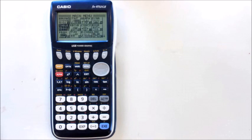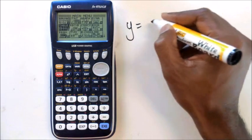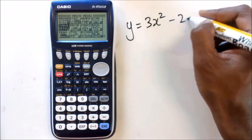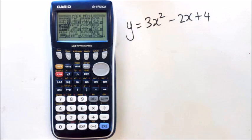Hey guys, in this video I'm going to show you how to go from an equation into a table and get some values to actually draw this equation as a graph. So let's say you're asked to draw this graph: y equals 3x squared minus 2x plus 4.